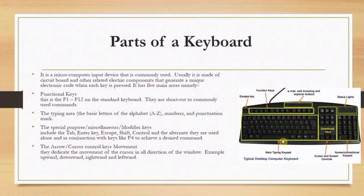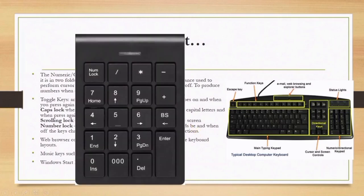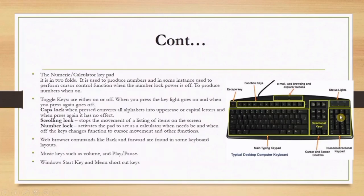Other parts of the keyboard include the numeric or calculator keypad, located on the right-hand side. It serves two purposes: it is used to produce numbers, and in some instances it is used to perform cursor control functions when the Num Lock is off.